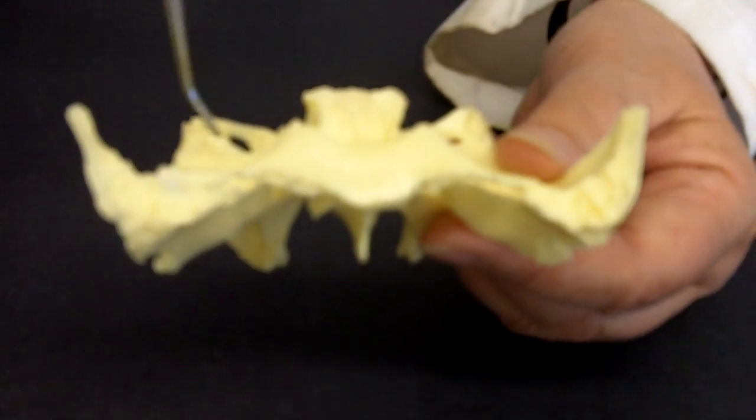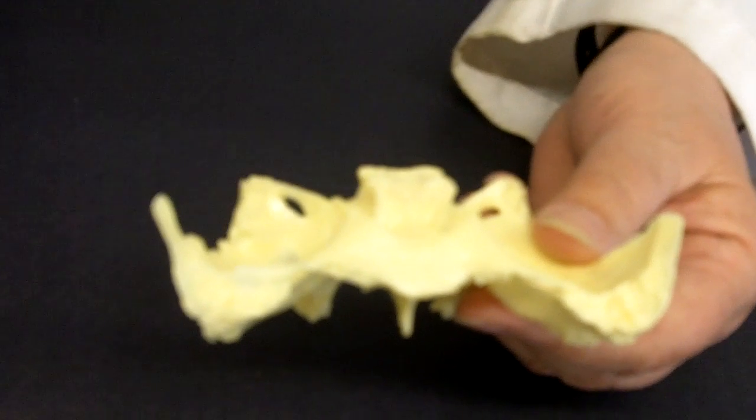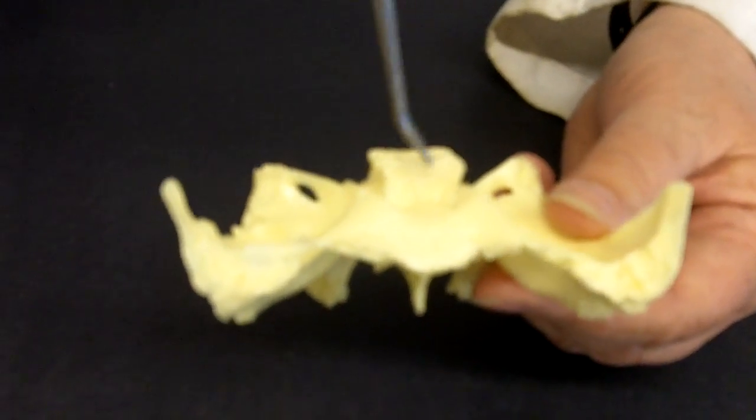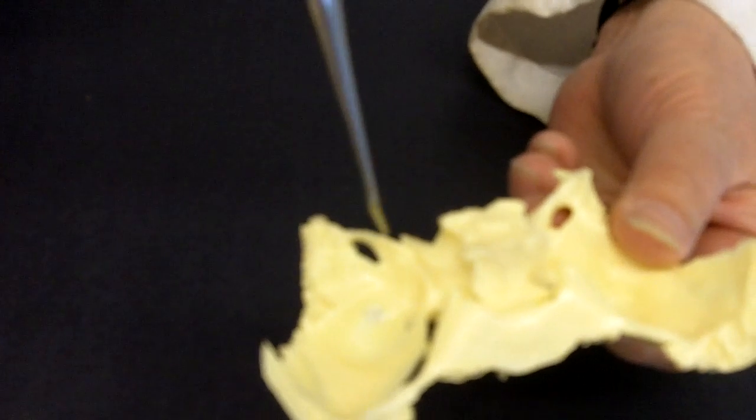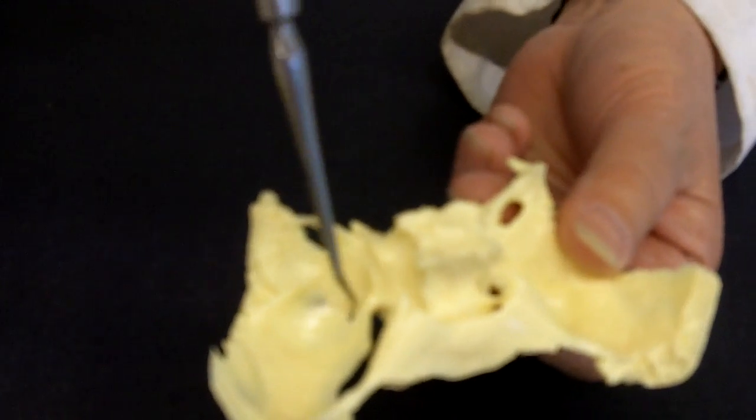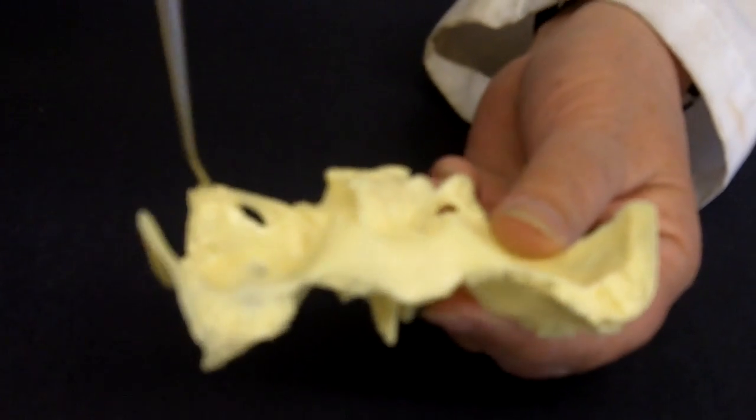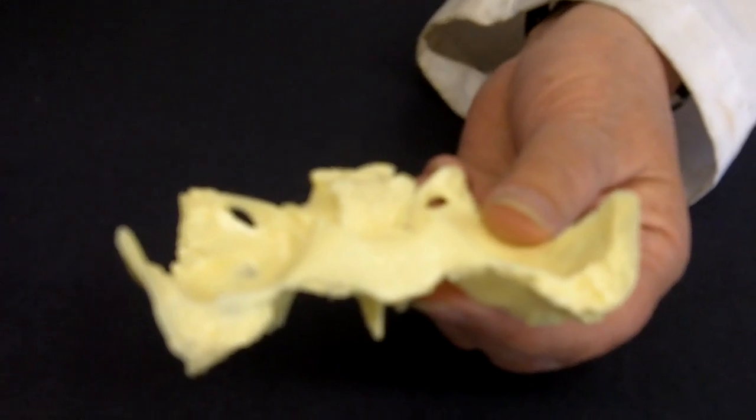We also have several foramina. We have the foramen rotundum, just near the sella turcica. Then the foramen ovale. Here's the rotundum, here's the ovale. And there's also foramen spinosum, not shown here.